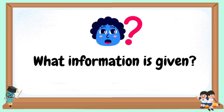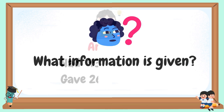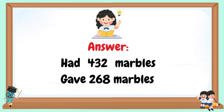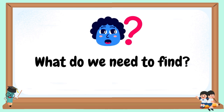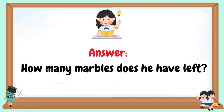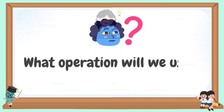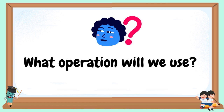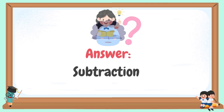What information is given? Answer: he had 432 marbles and gave 268 marbles. What do we need to find? Answer: how many marbles does he have left? What operation will we use? Answer: subtraction.